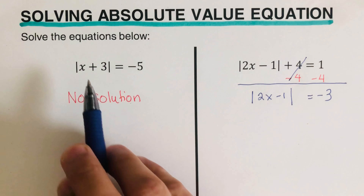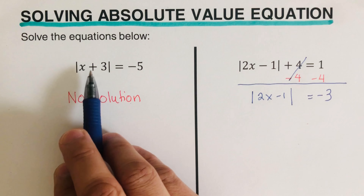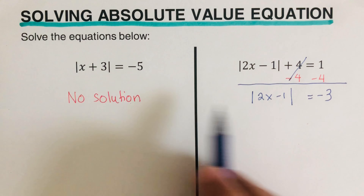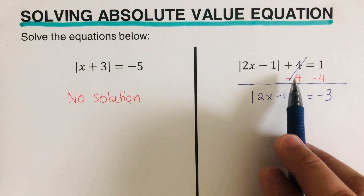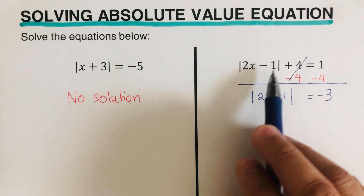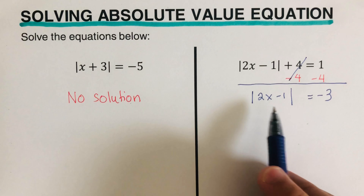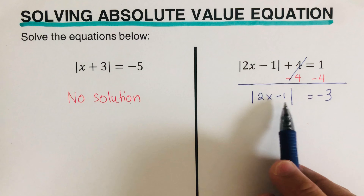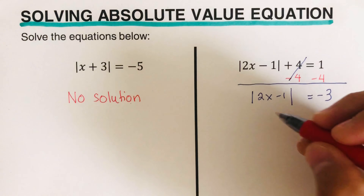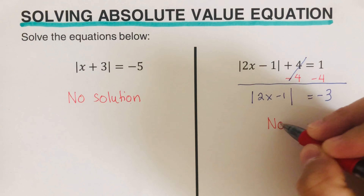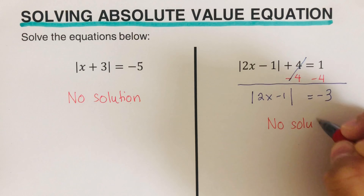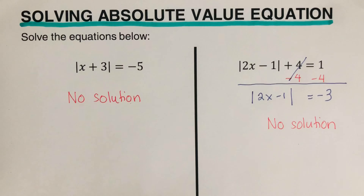This problem was not isolated yet because there was a plus 4 next to the absolute value expression, so we subtract 4 from both sides. Since our absolute value is now equal to a negative value, -3, we go ahead and say this is another problem where there is no solution. Did you get the same answer? Good.